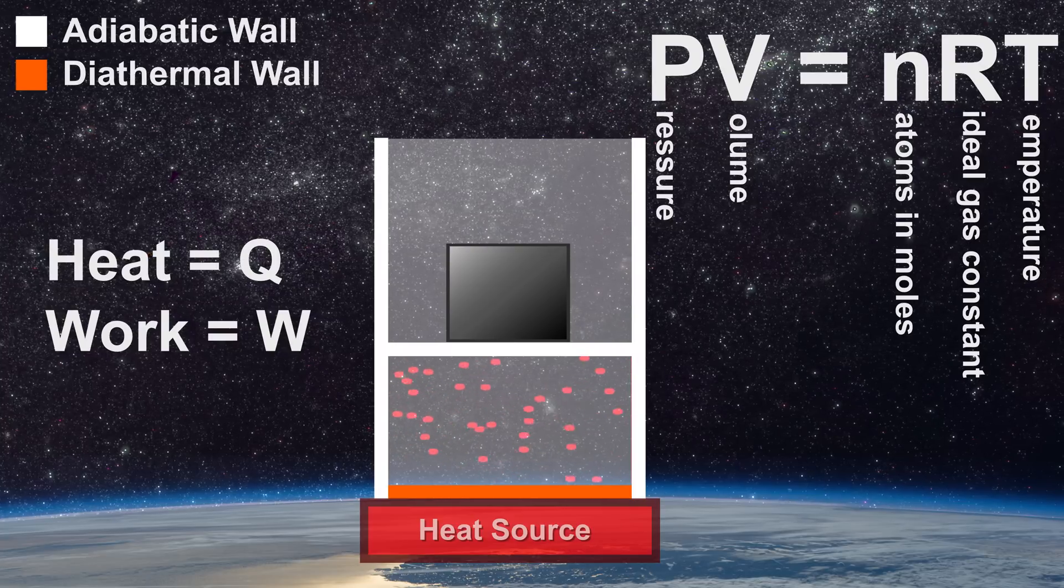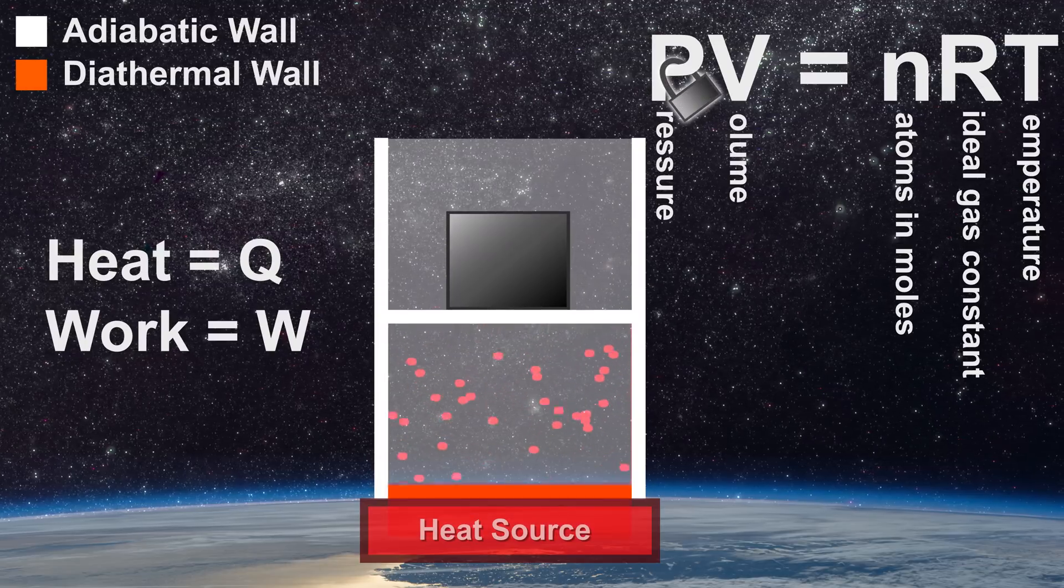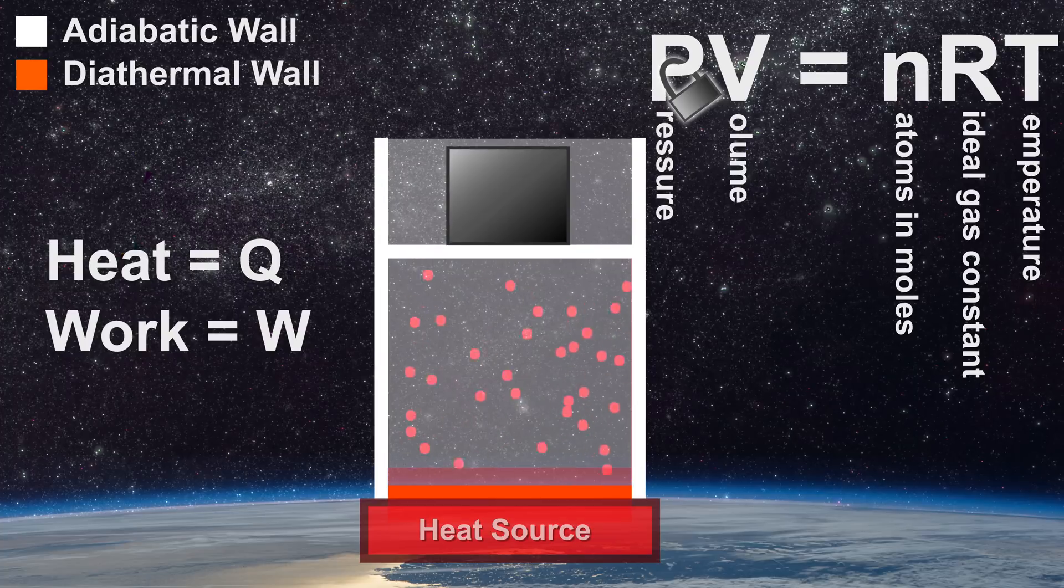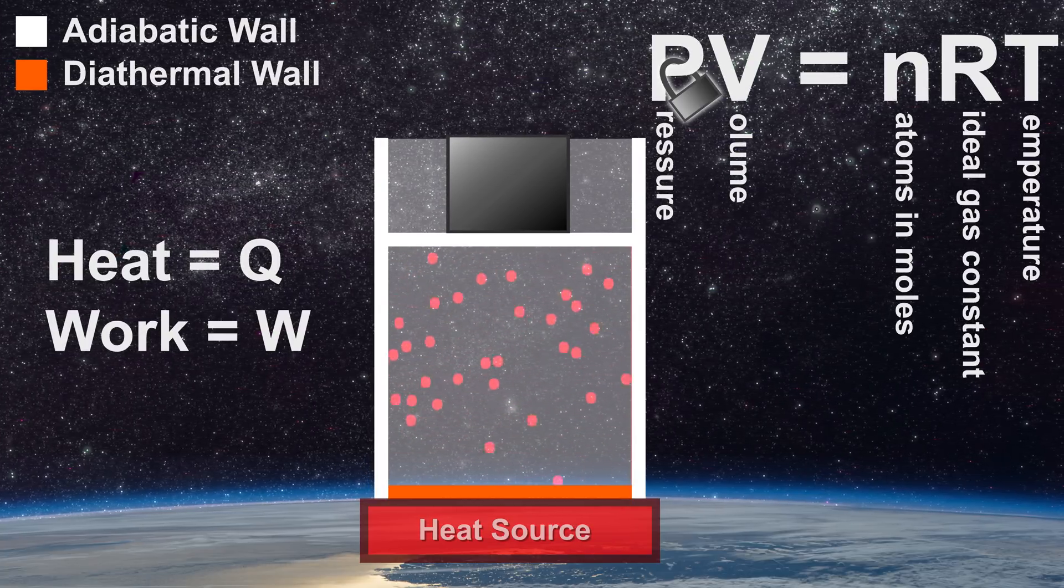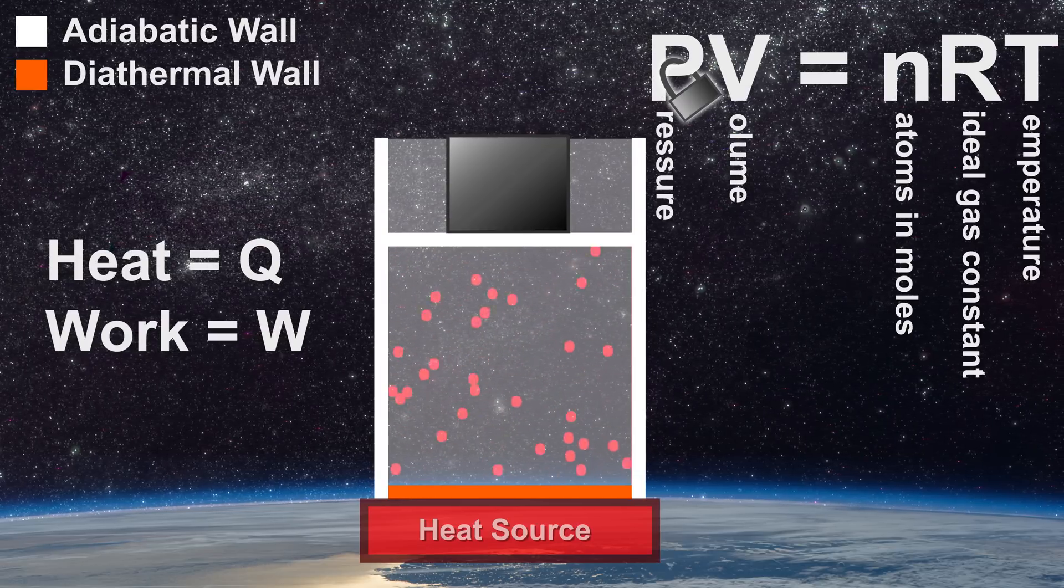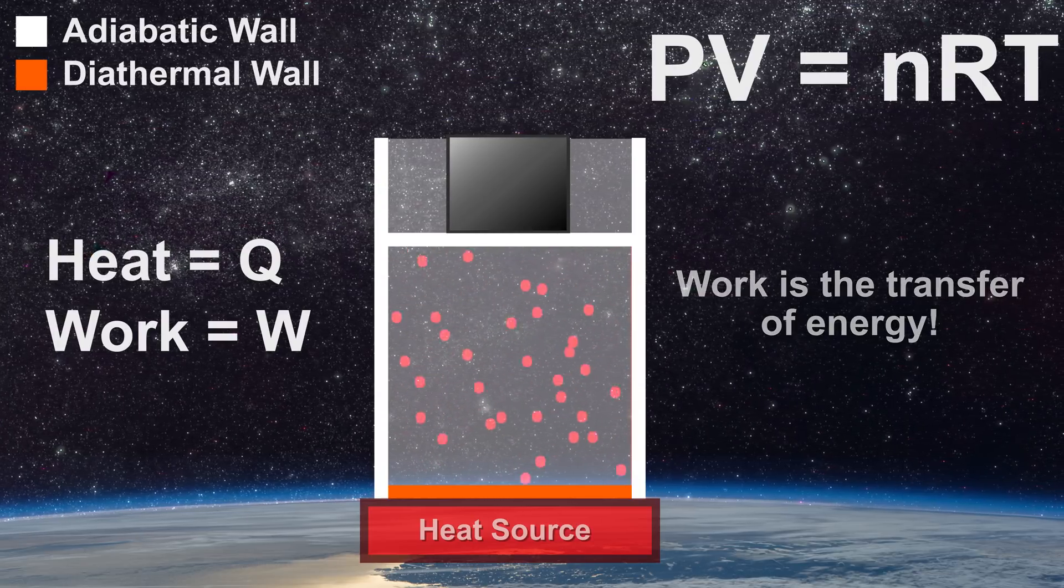Conversely, we could have done the experiment with our piston unlocked. In that case, it could move such that the pressure stayed constant. An isobaric change would be taking place. The volume would increase with temperature when the piston moves up and it does some work. This leads to a new understanding of work. Work is the transfer of energy using the uniform motion of atoms.